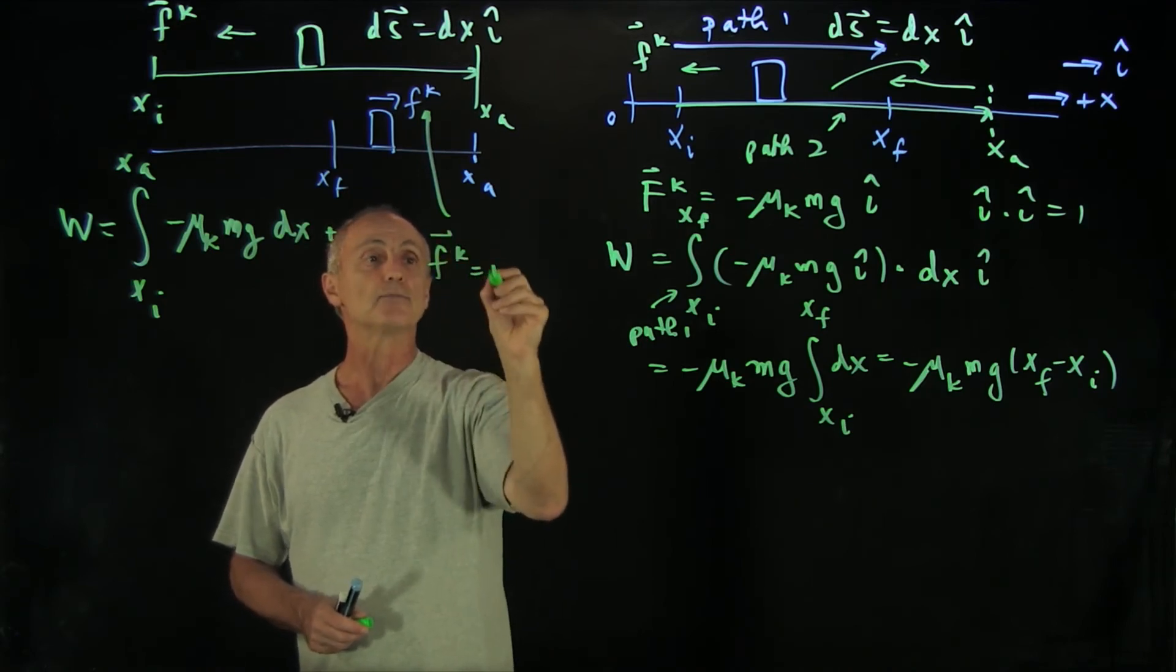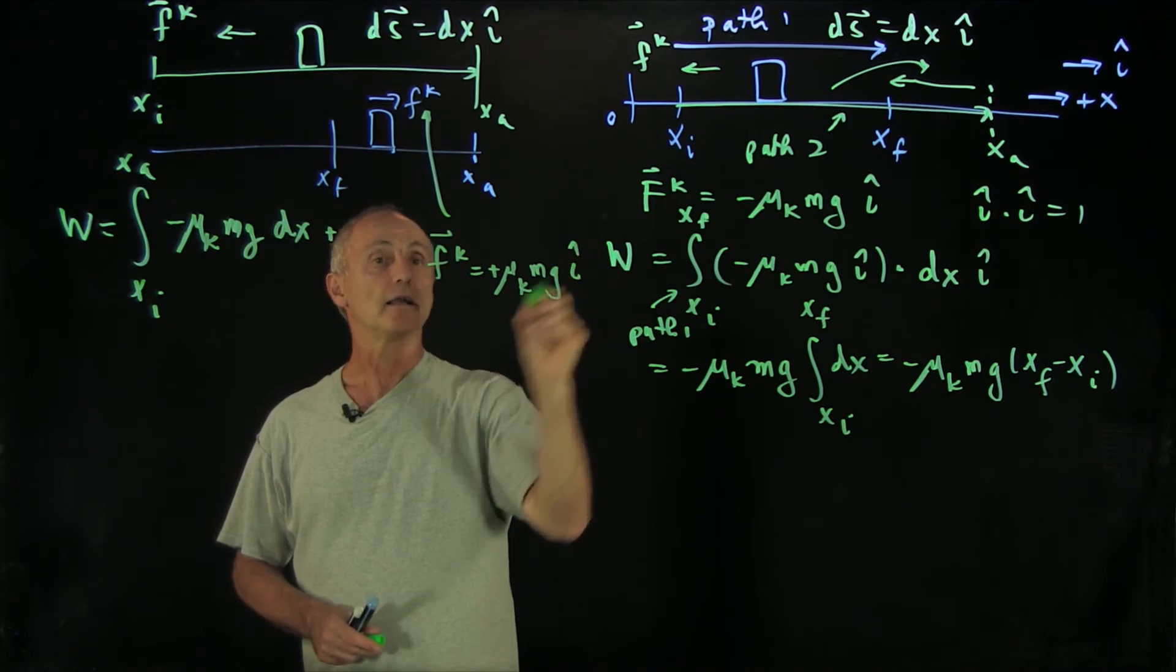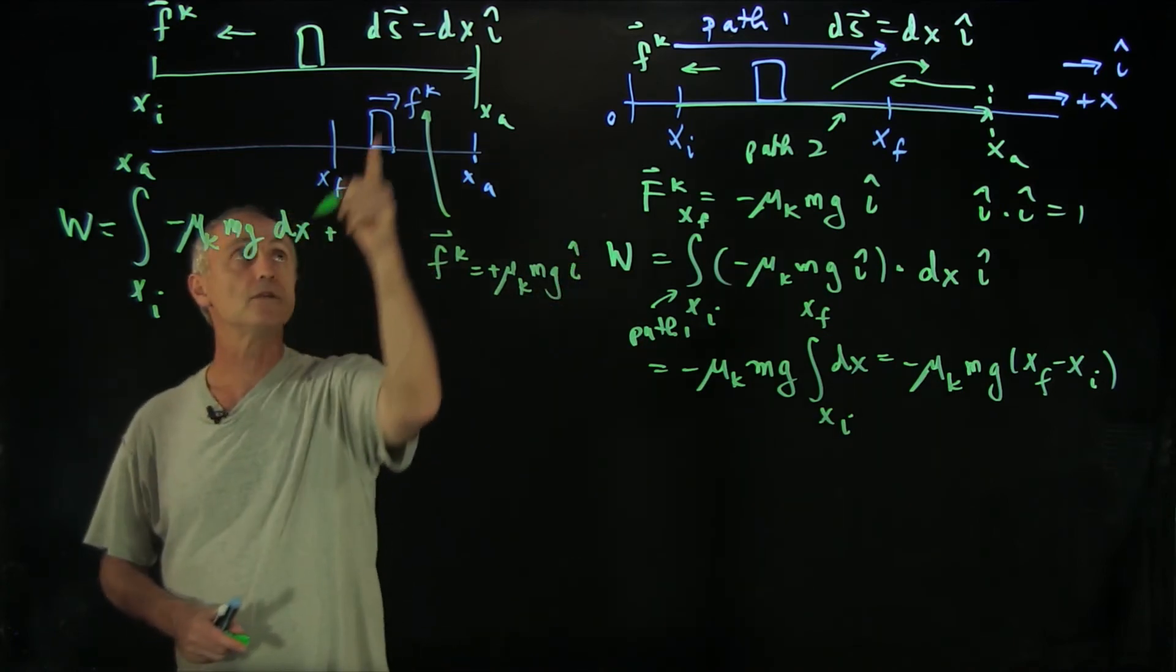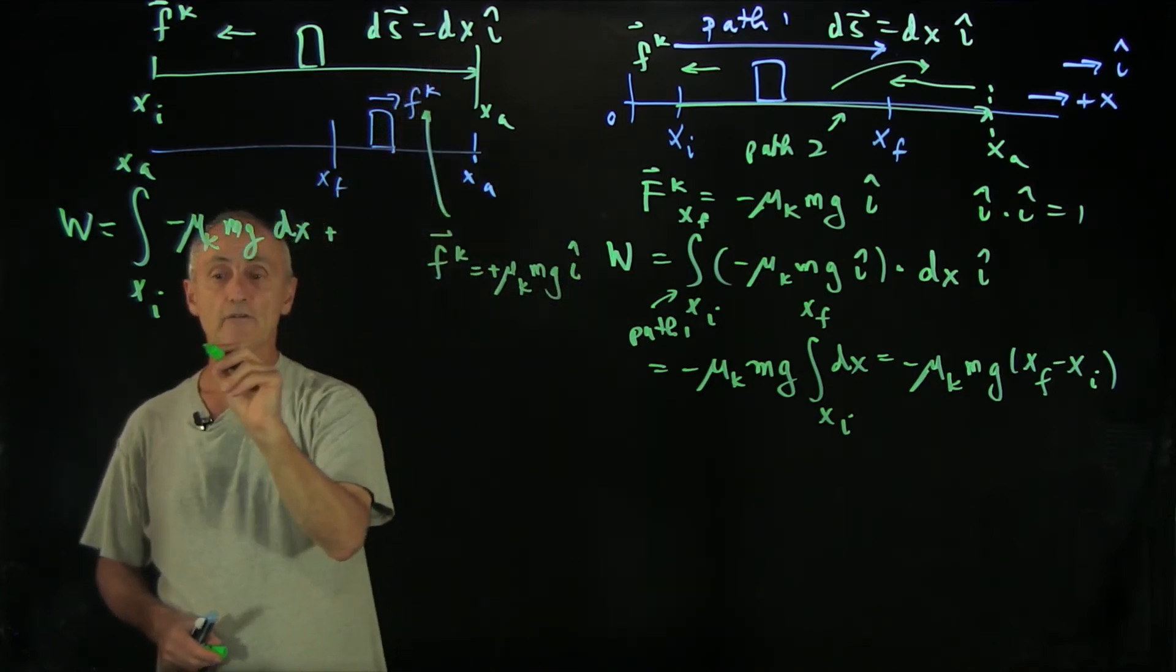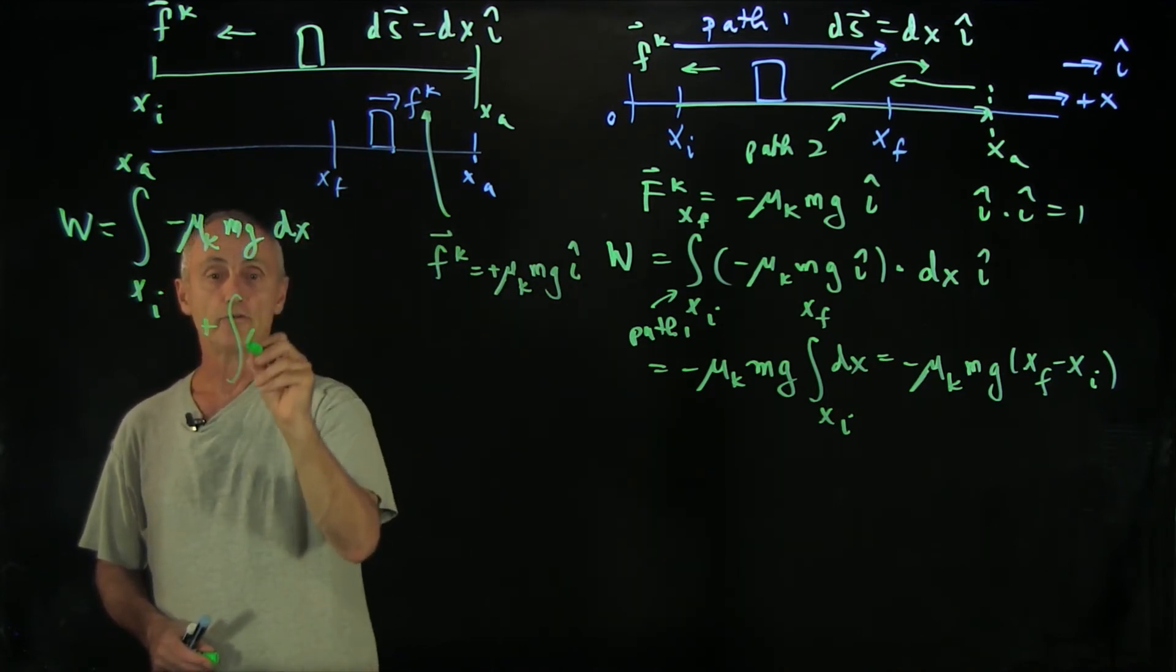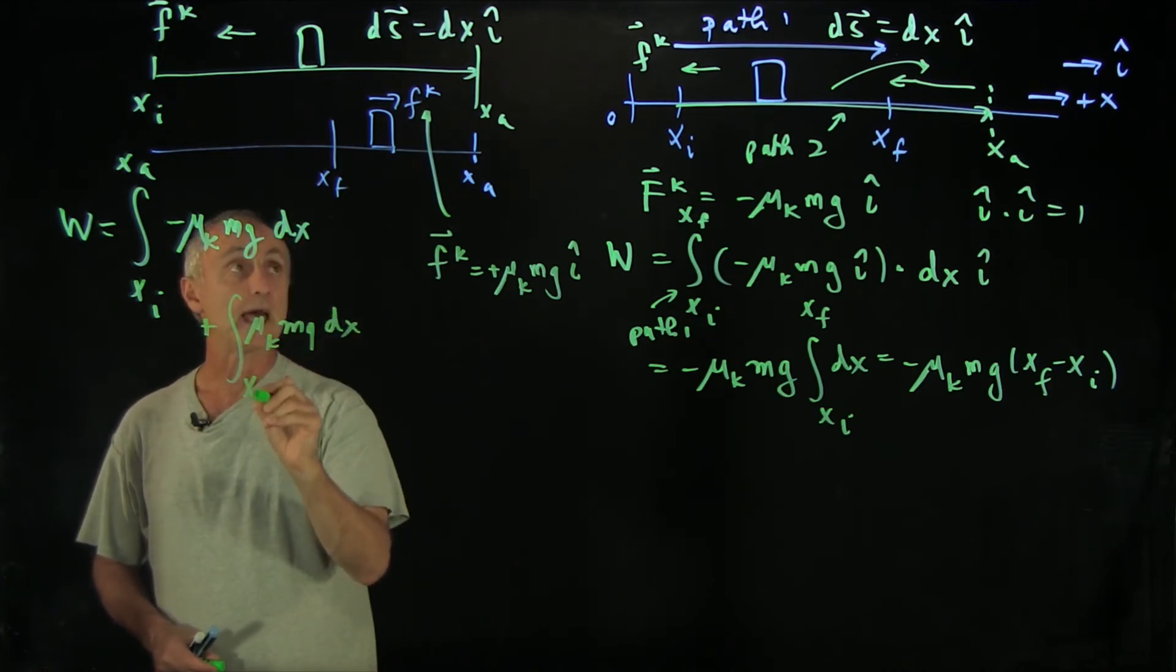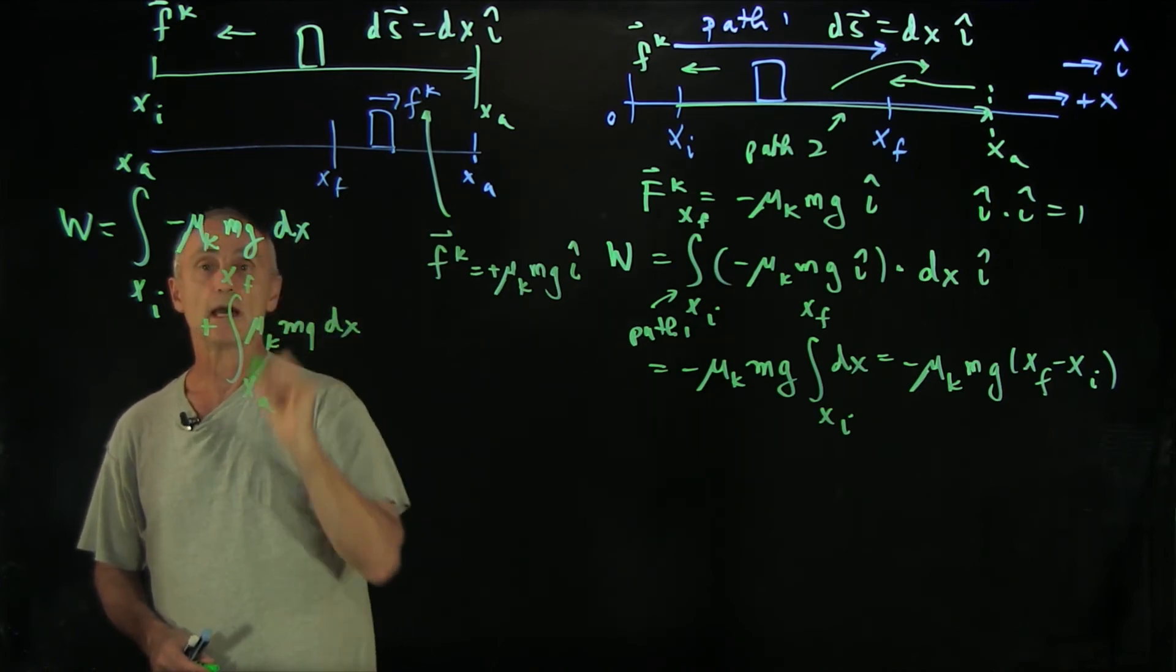Notice on this path, f_k is plus μ_k mg i hat. And so when we dot it into dx, we have a plus sign. We'll just continue that integration here, of μ_k mg dx from x_a to x_final.